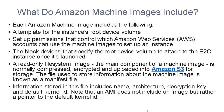AMI also includes a read-only file system image. The main component of the machine image is normally compressed, encrypted, and uploaded into Amazon S3 for storage. The file used to store information about the machine image is known as a manifest file. Information stored in the file includes name, architecture, description key, and default kernel ID.